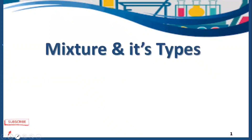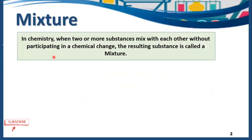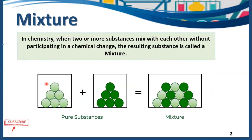In today's video we are talking about mixture and its types. When different substances combine together they form a mixture. In chemistry, when two or more substances mix with each other without participating in a chemical change, the resulting substance is called a mixture. A mixture is when two or more pure substances combine or mix together physically without any chemical interaction, in any ratio.